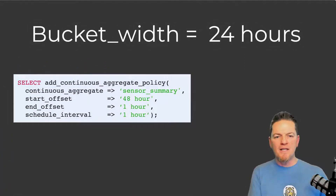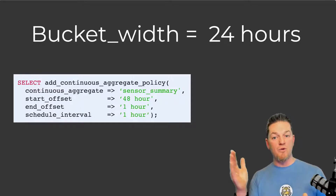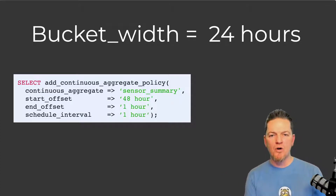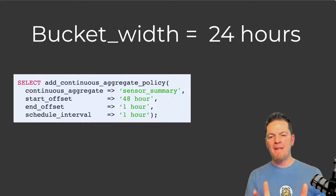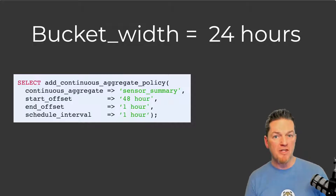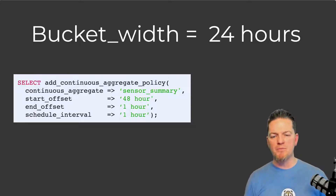A better refresh policy for a 24-hour bucket would be a start offset of 48 hours with an end offset of one hour — or maybe three or four hours. Our recommendation is that the end offset is far enough back that you're not trying to materialize data currently being written, avoiding write contention. This is a better example of a refresh policy for a 24-hour bucket.